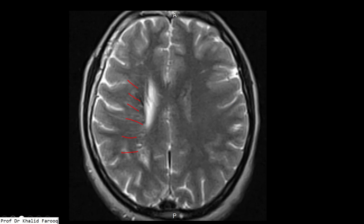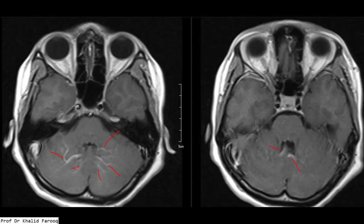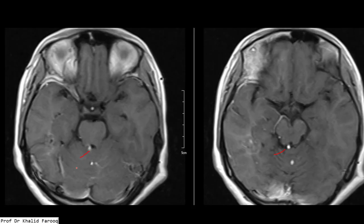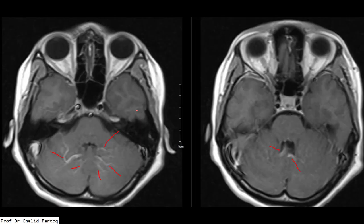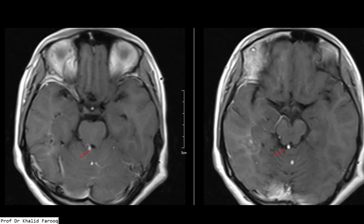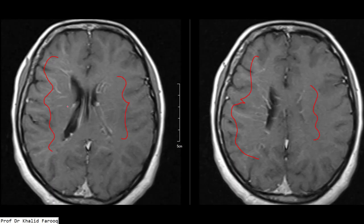Especially on post-contrast images, we can see them in: number one, cortical gray matter; number two, subcortical white matter; and number three, deep white matter, especially around the ventricles. In this case we have the third type, that is, lesions are noted around the ventricles.